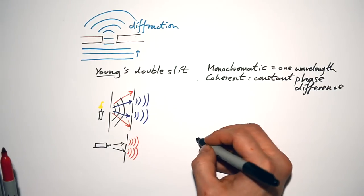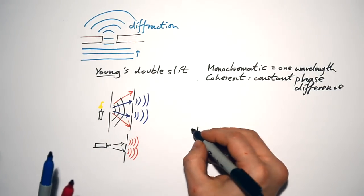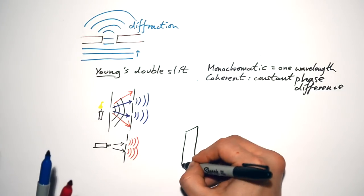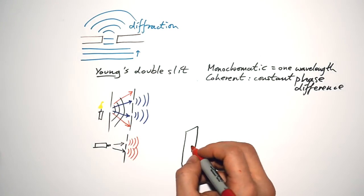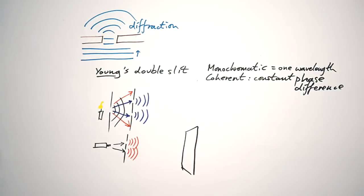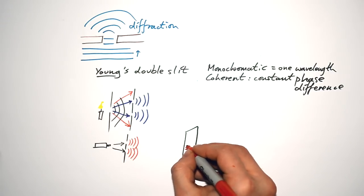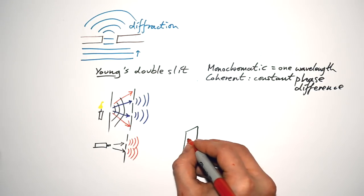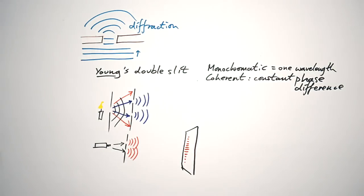From then on the whole experiment is exactly the same. On our screen, instead of just two spots being produced, we actually see a whole band of fringes. Why is that? Because we have interference going on — we have superposition.